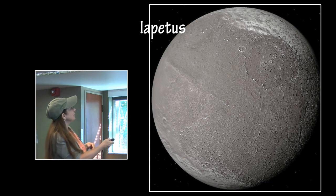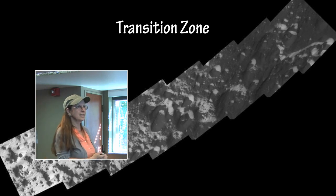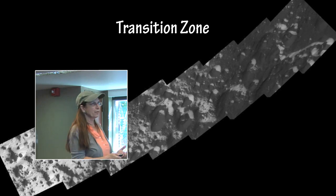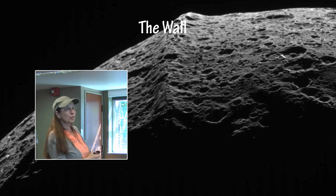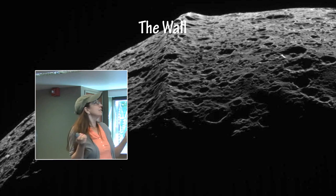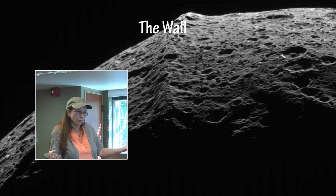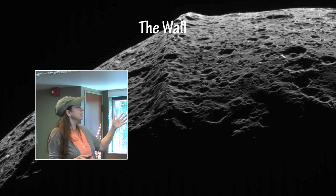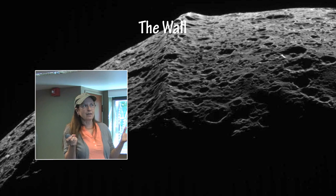Iapetus also has this bizarre ridge which circles the entire planet. Here is the transitional zone from the bright areas to the darker areas — study that transition zone and the difference between where things settle and where they're sublimating. Here is that strange wall that circles the entire planet. Did this object used to rotate much faster, giving it an oblate shape wider at the equator, and then this formed as it rotated slower and was no longer able to maintain that shape? Or did this moon used to have its own ring of material that collapsed onto the surface? Any of those are possible.